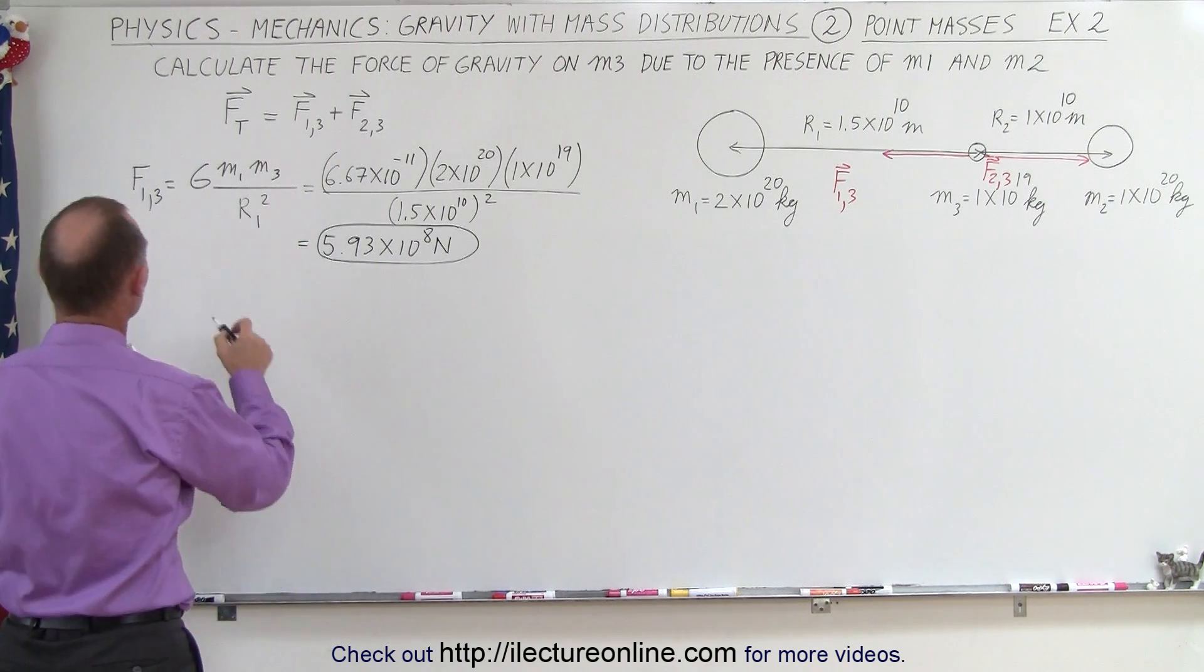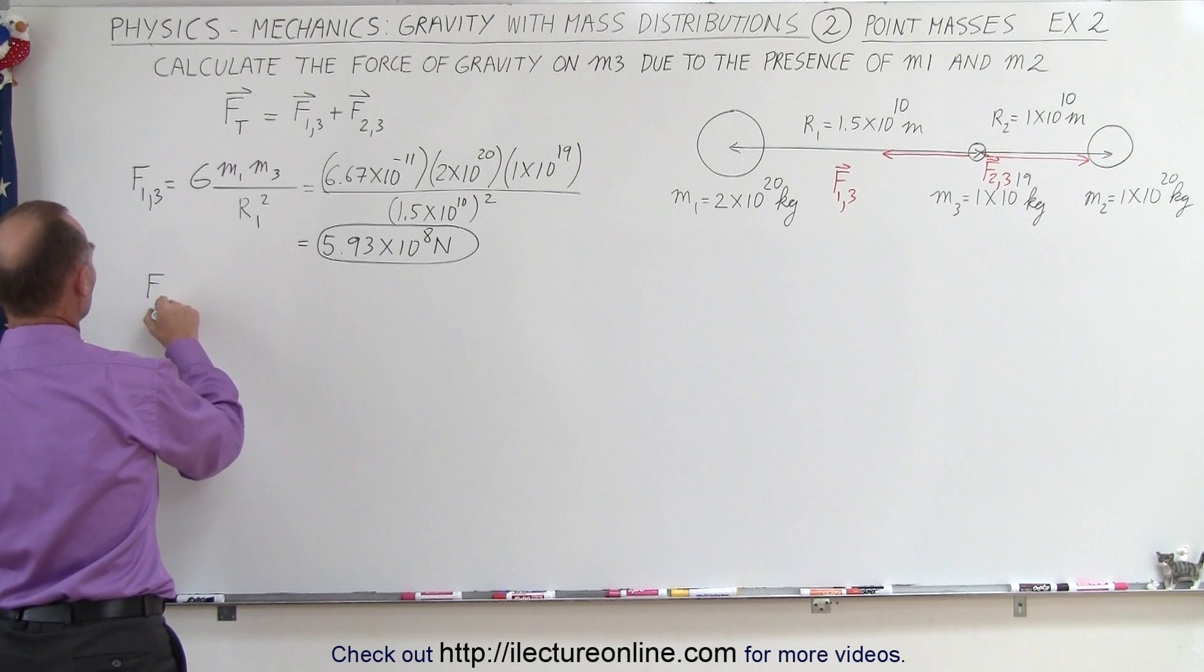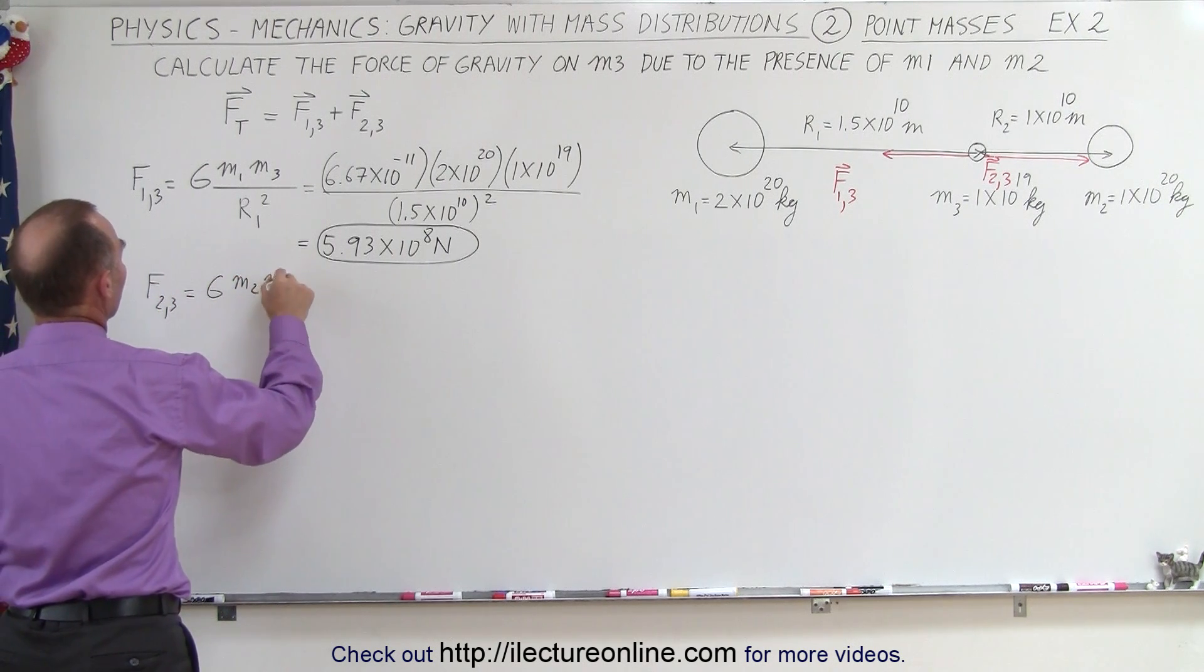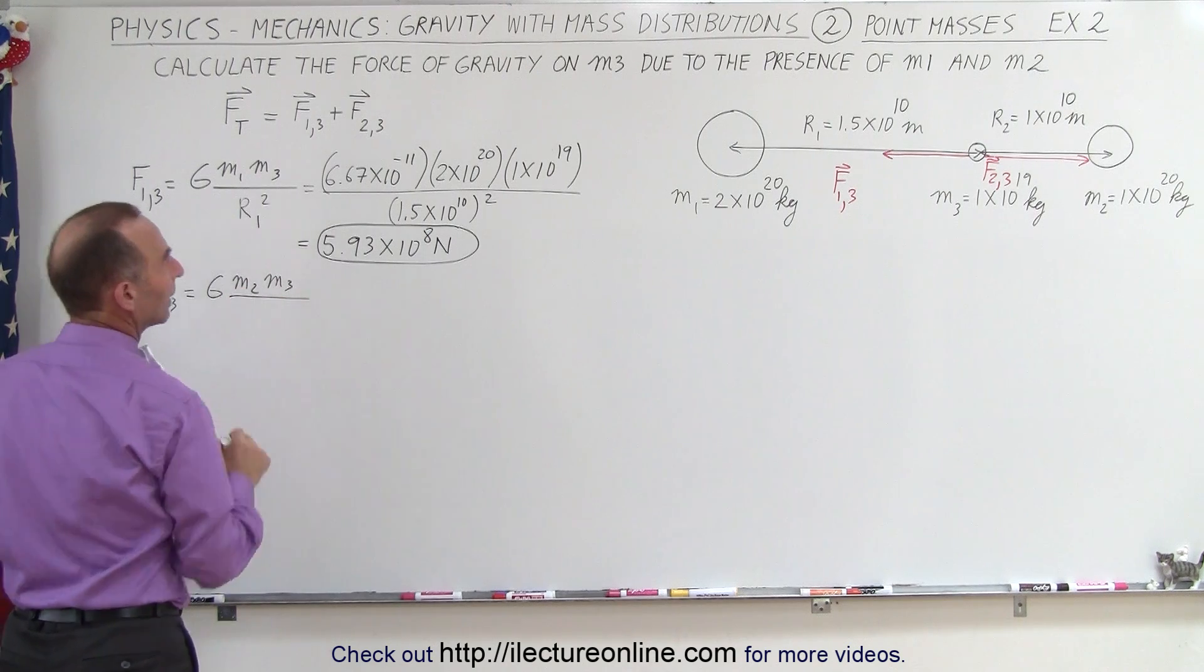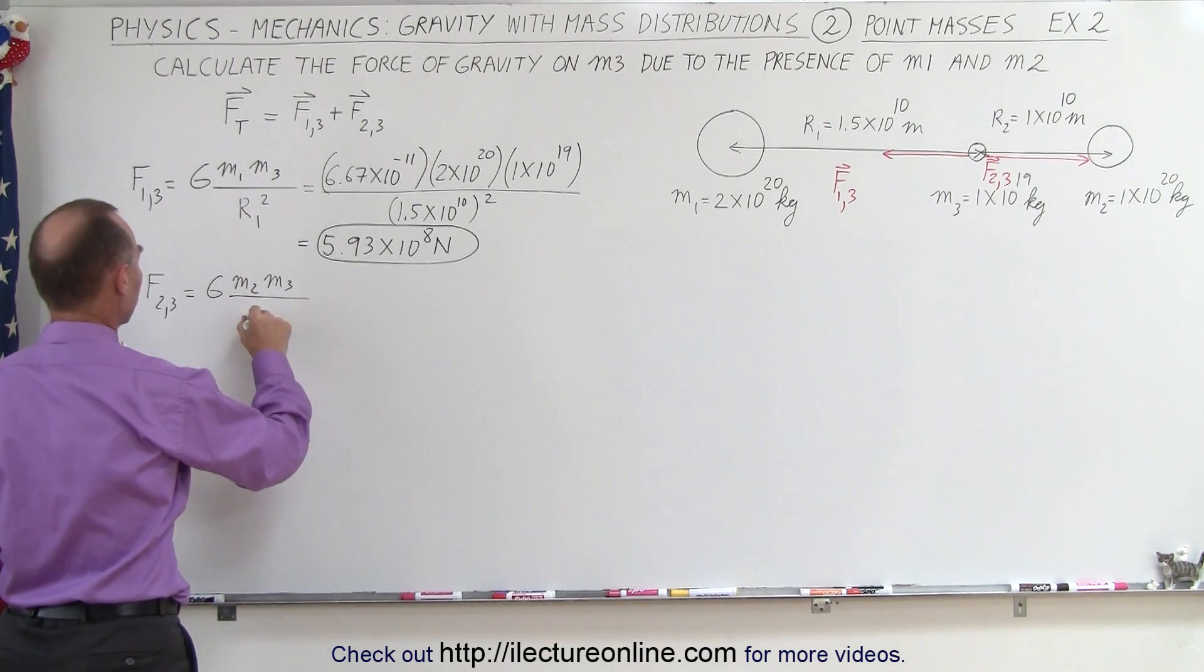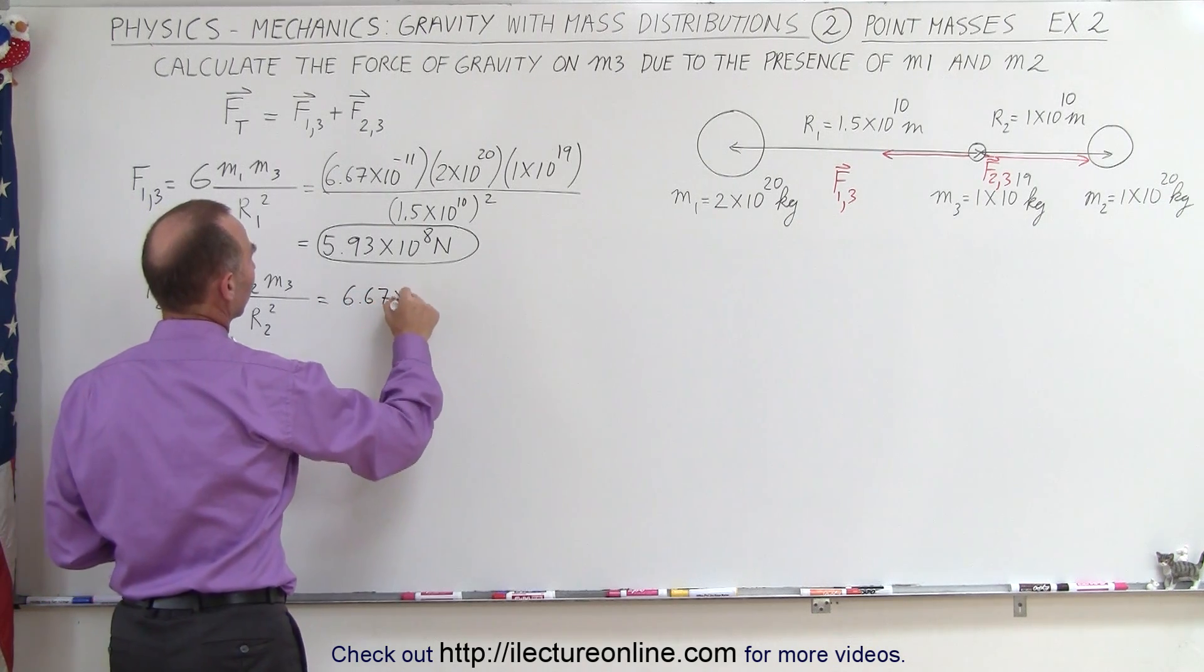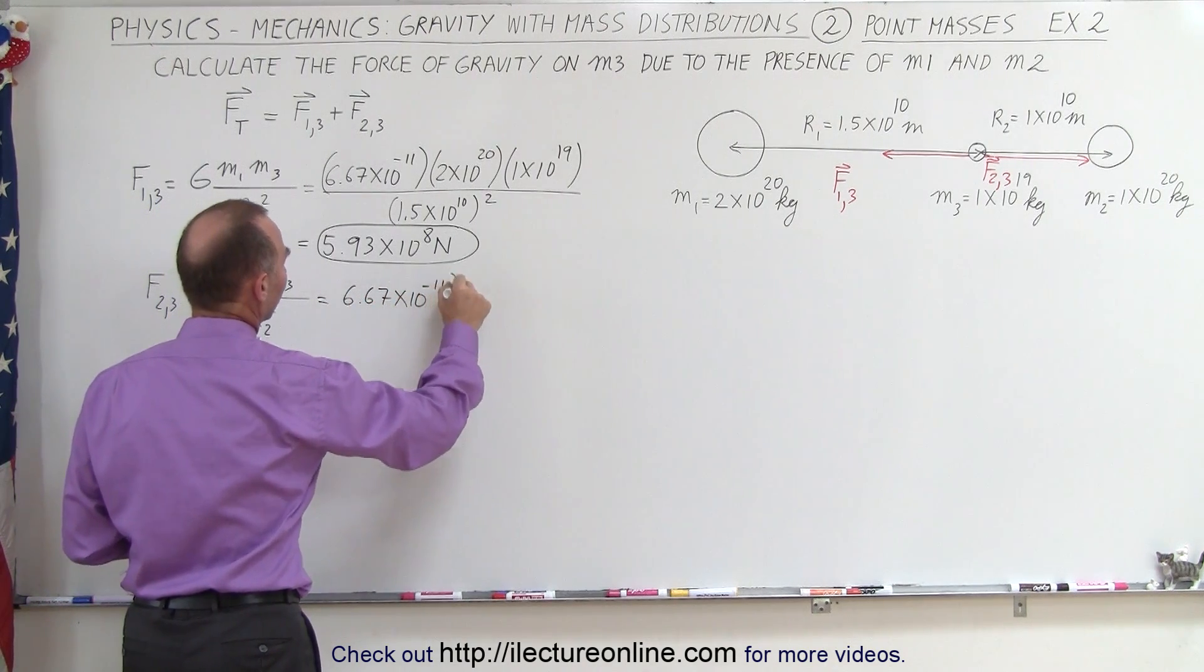Now let's find the force between 2 and 3. So the force between 2 and 3 is equal to G m2 m3 divided by, in this case, r2 squared.